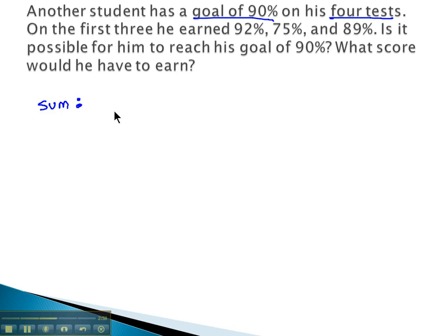So the sum of all the tests, mean, average means they're all the same. Four tests, all the same at 90%. Four times 90 gives us 360 total points that this student needs.